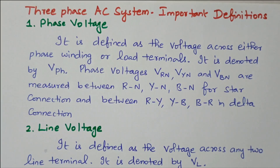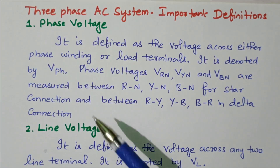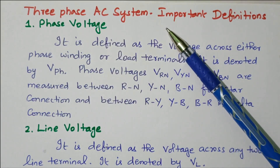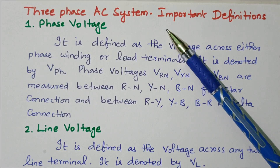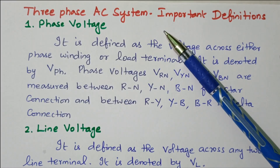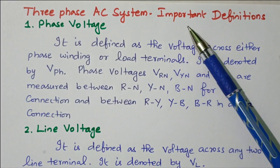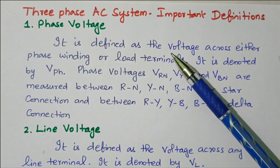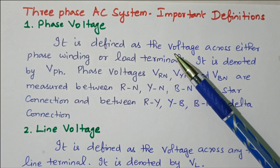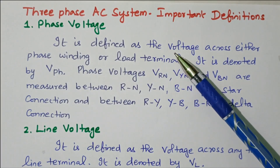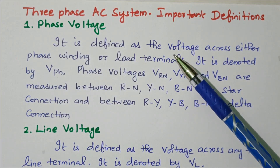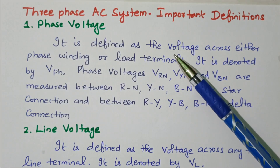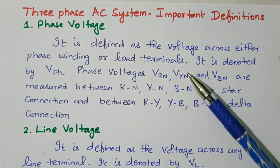Welcome viewers. In this video we'll see the important definitions of a three-phase AC system. In a three-phase AC system there are two types available: star connection and delta connection. For these two methods, the voltage and current — line voltage and phase voltage — will be different.